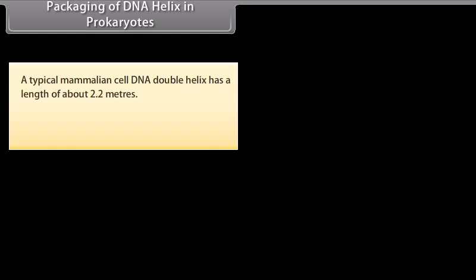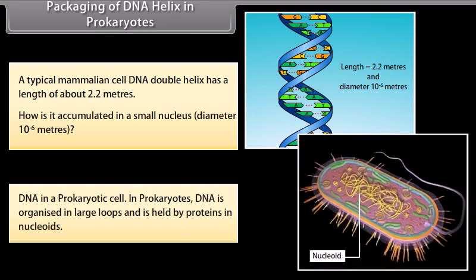A typical mammalian cell DNA double helix has a length of about 2.2 meters. How is it accumulated in a small nucleus? In prokaryotes, DNA is organized in large loops and is held by proteins in nucleoids.